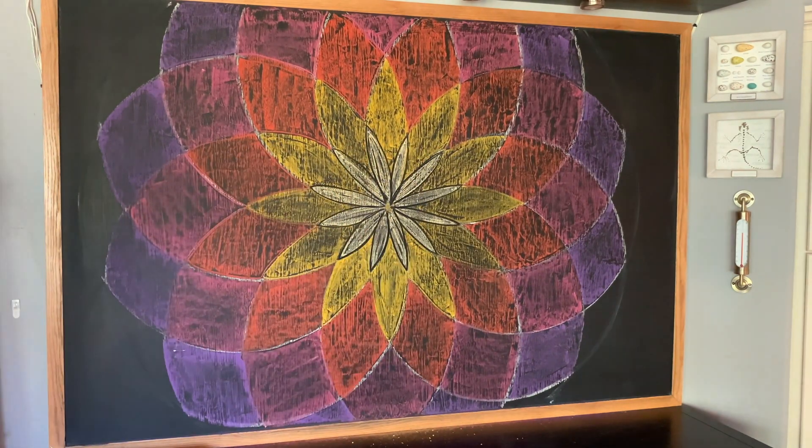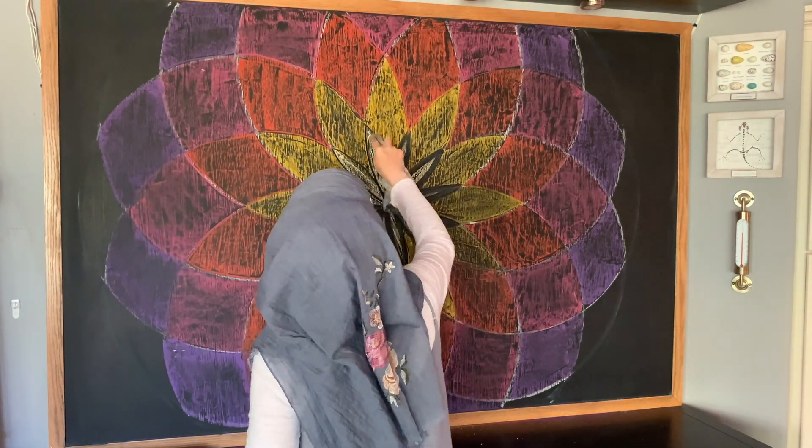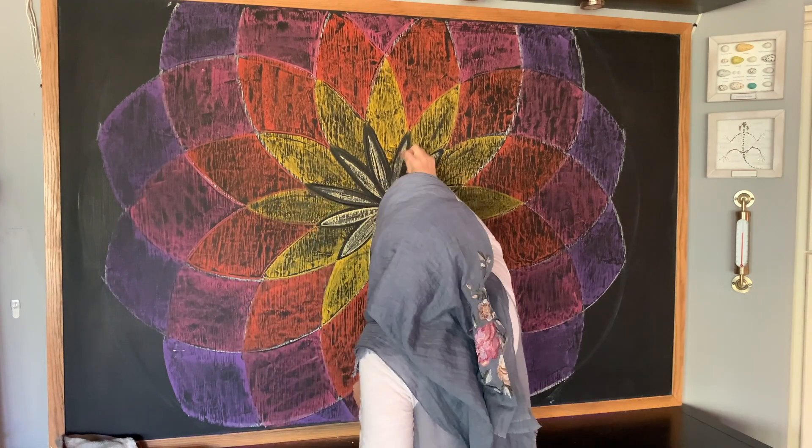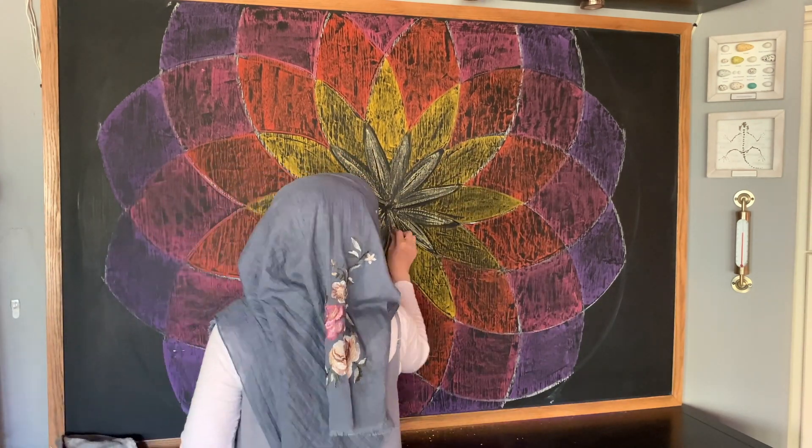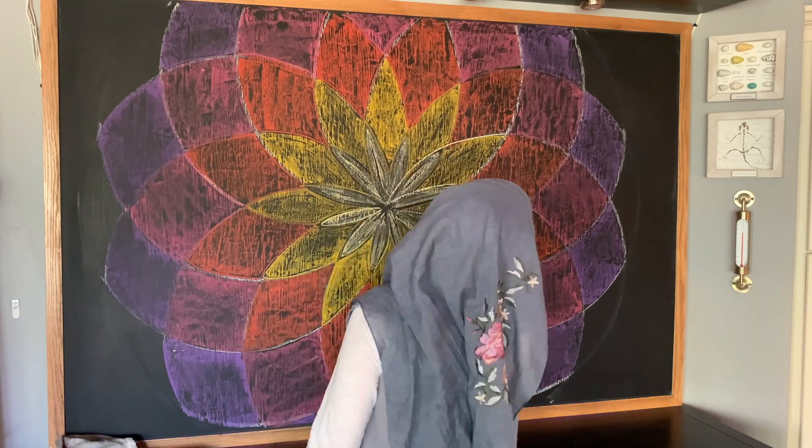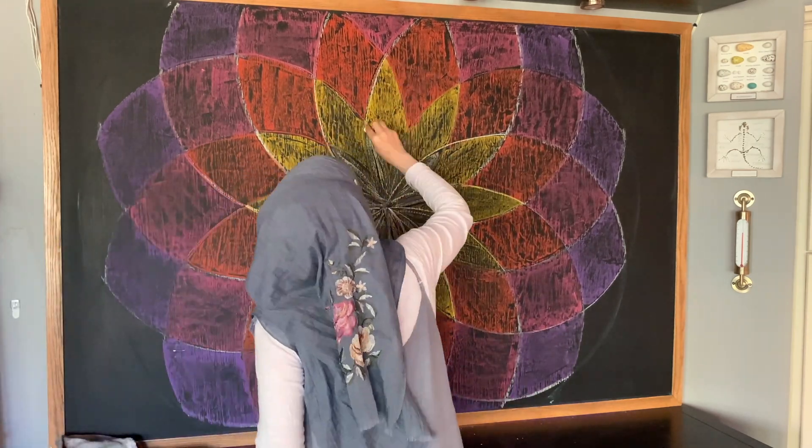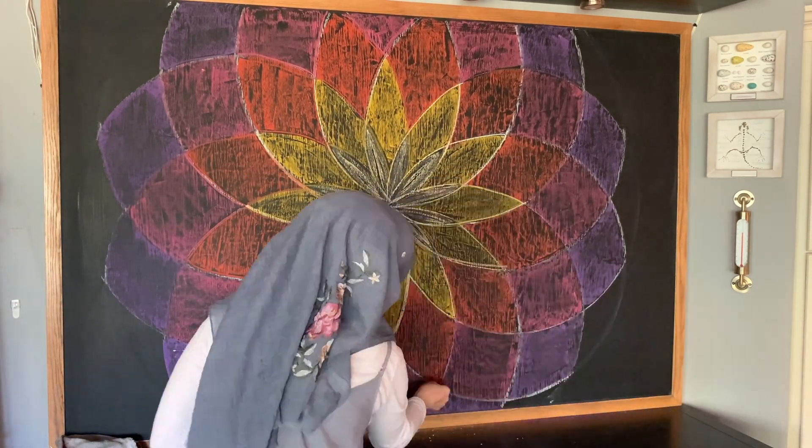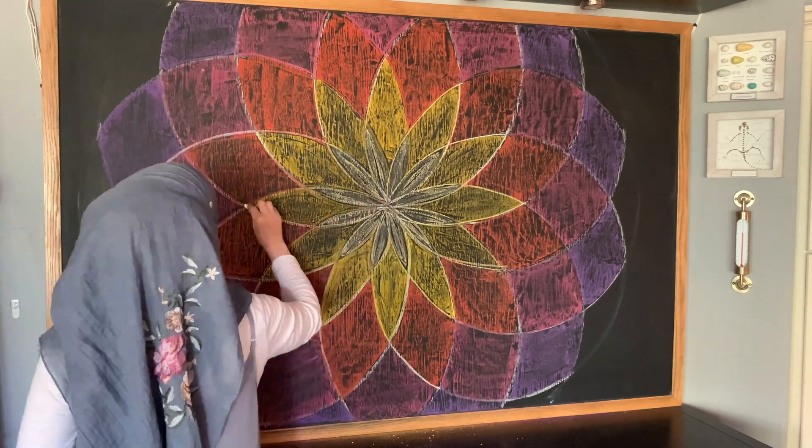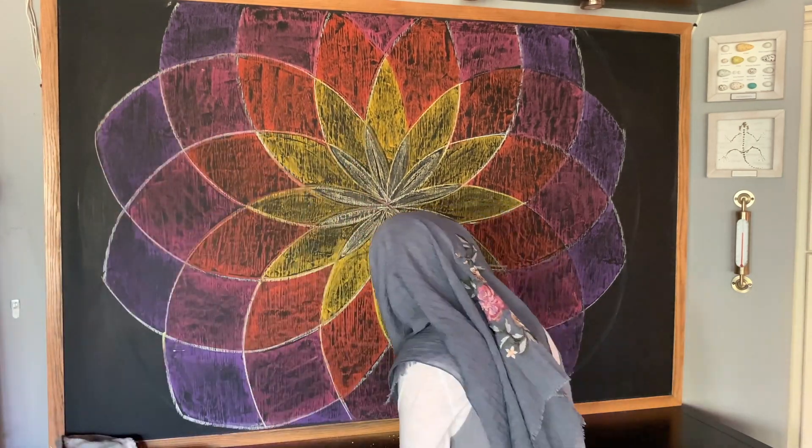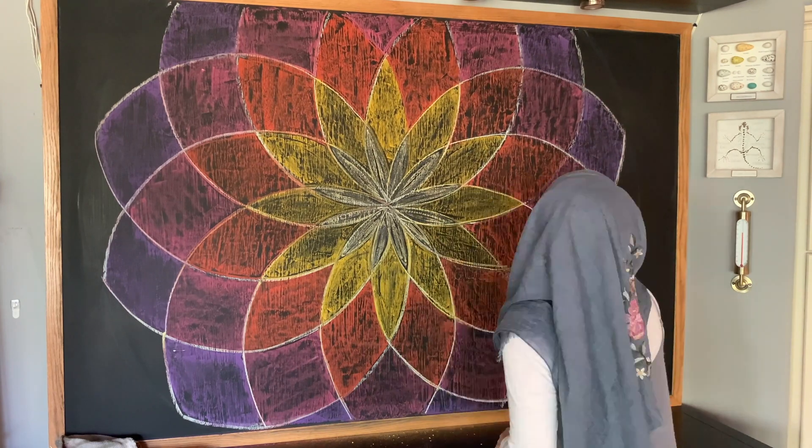I thought I would outline everything with black and it looked terrible, so immediately I erased it and redid it. Then I went through with my white chalk and outlined everything again with white, because that's what it looked like in the beginning. But once you get all of your chalk in there you kind of lose that, and I really like the way that the white accentuates the drawing.